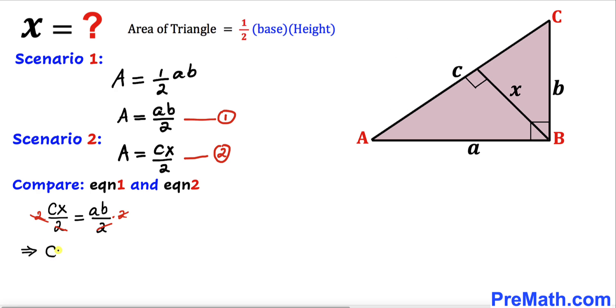So we end up with C times X equals A times B. Let's divide both sides by C. The Cs cancel out.